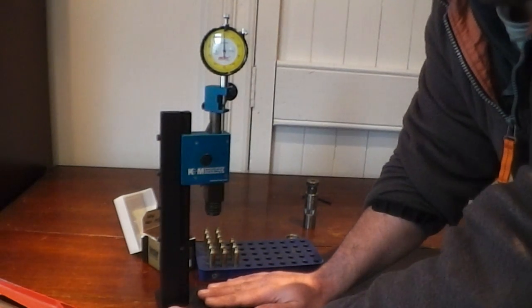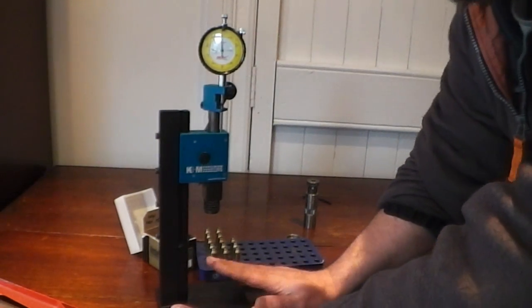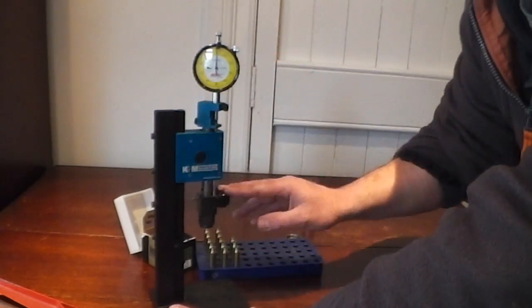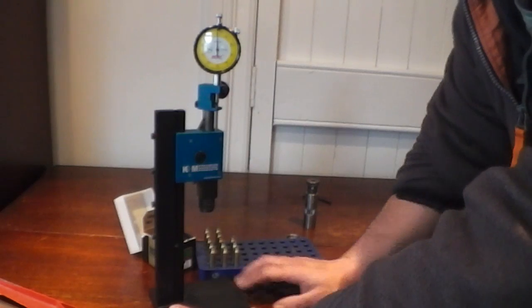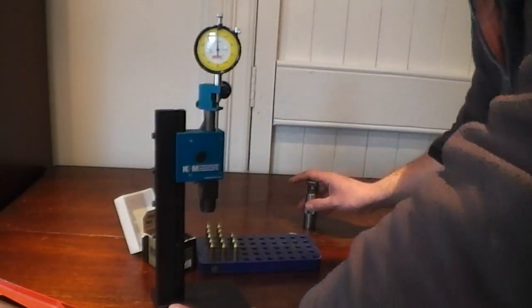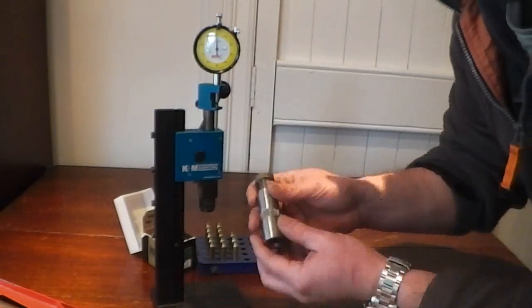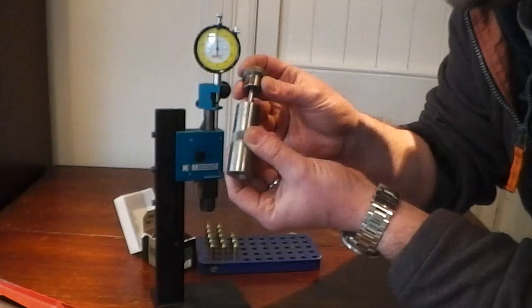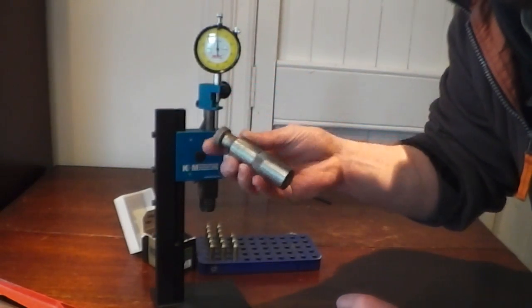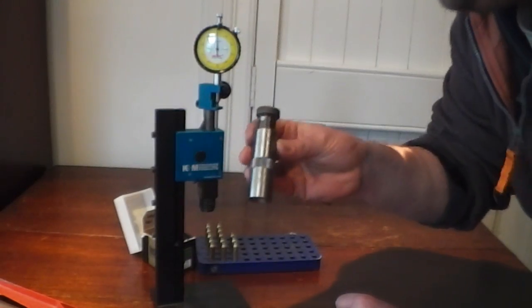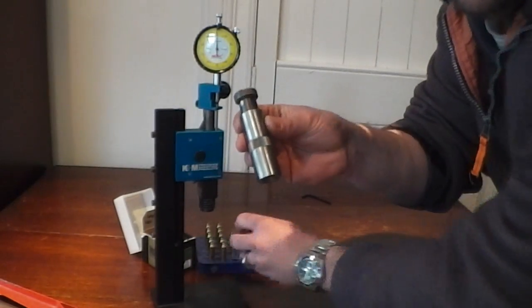So what I'm doing here is running you through this press and how it works. It's an arbor press which means that it presses down, simple as that.